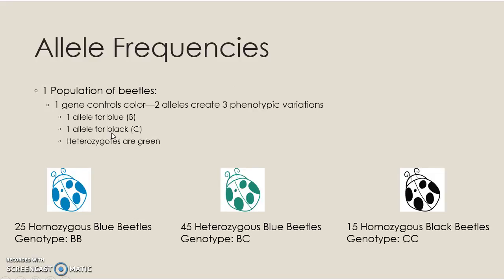We're going to do this on a fictional population of adorable little beetles that have different color alleles. In this scenario, there is one population with one gene that controls color. There are two alleles for that gene and three total phenotypic variations — three different colors. There's an allele that dictates blue color in homozygous form: BB is blue, and there are 25 beetles with genotype BB.